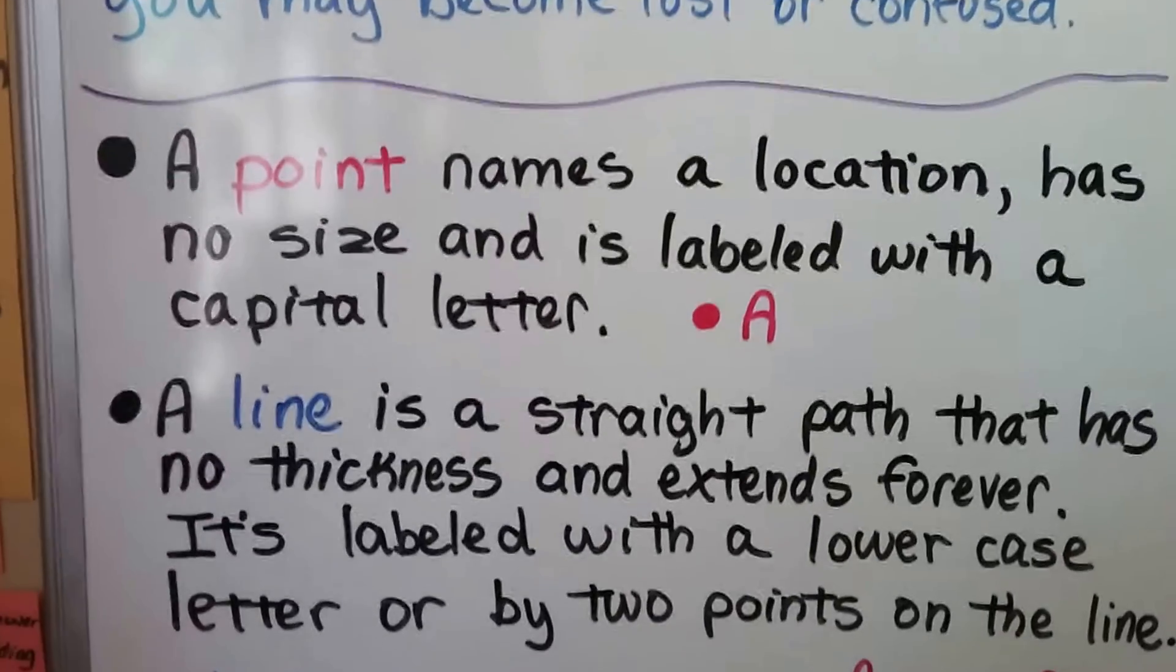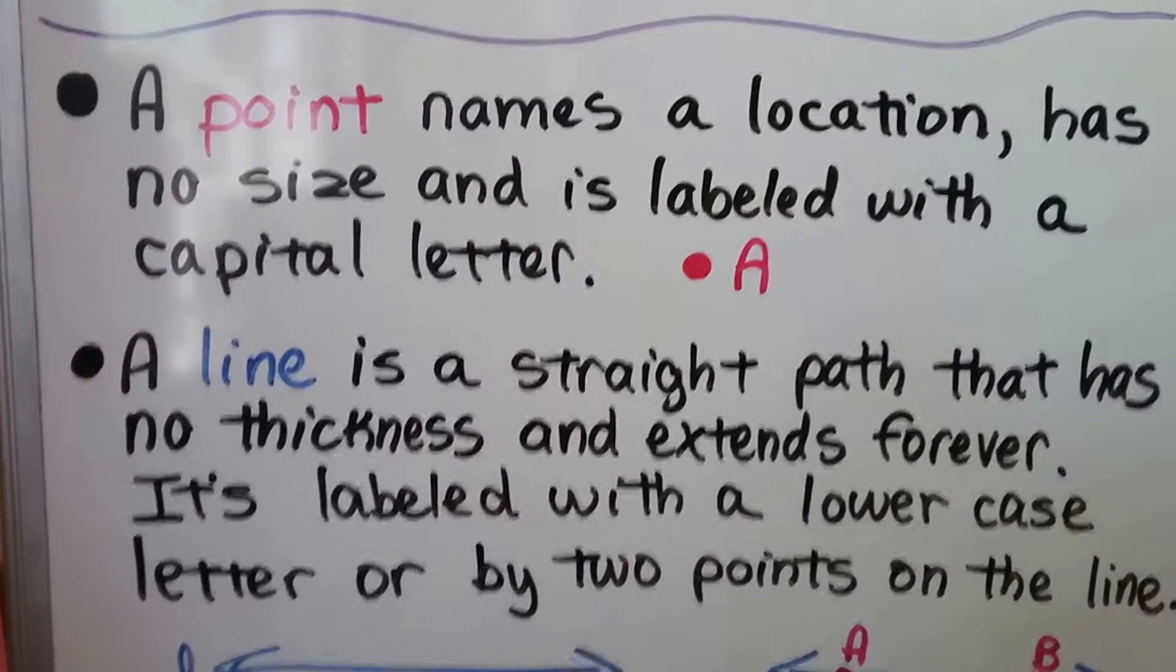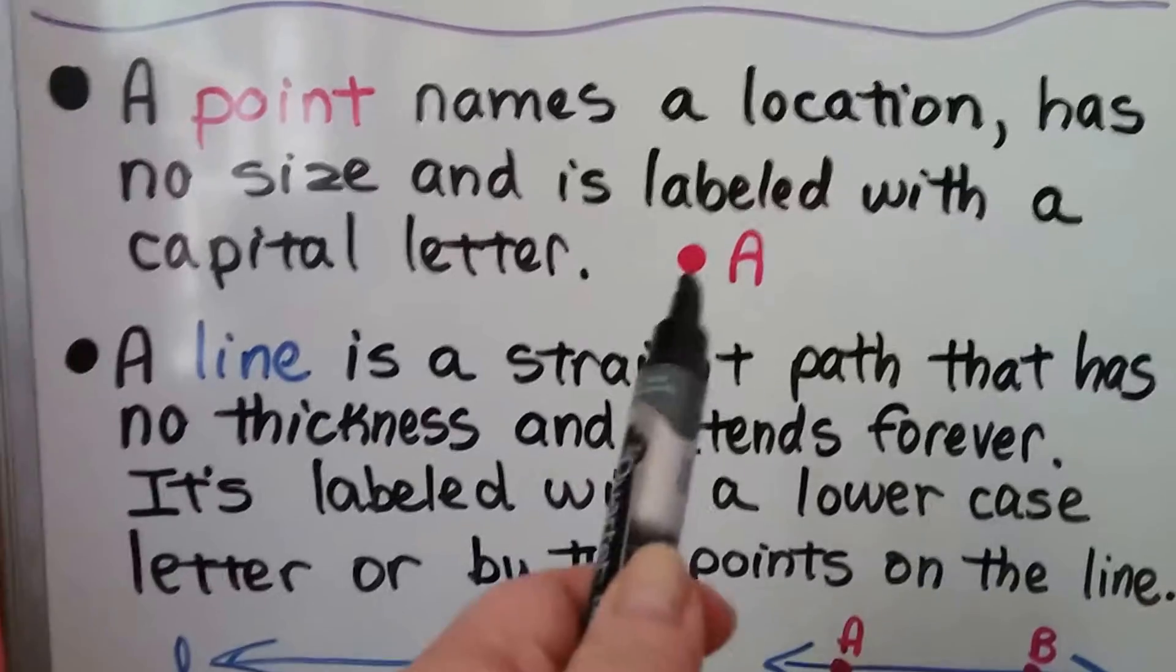A point names a location, has no size, and is labeled with a capital letter. So that would be point A.